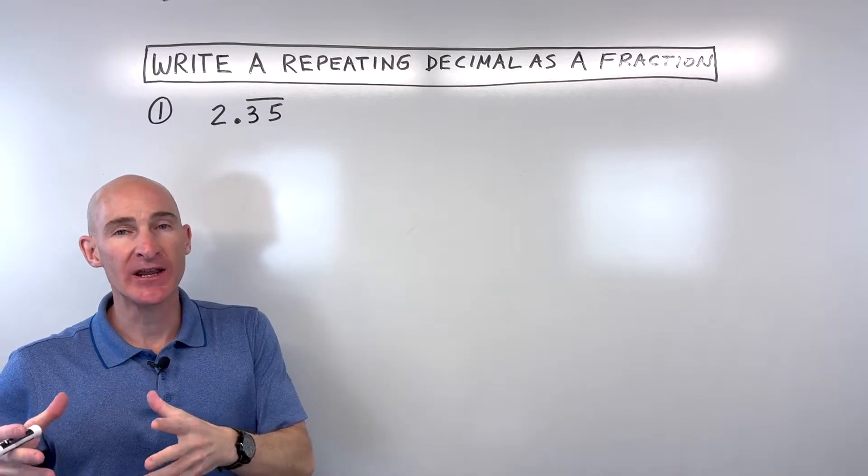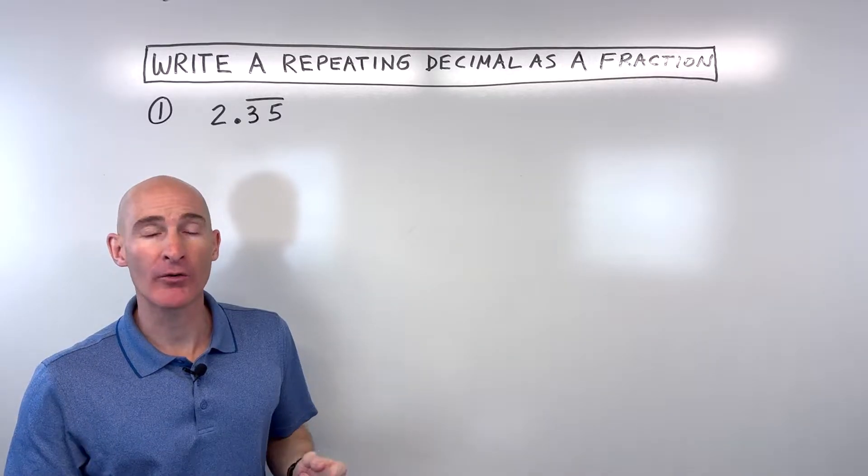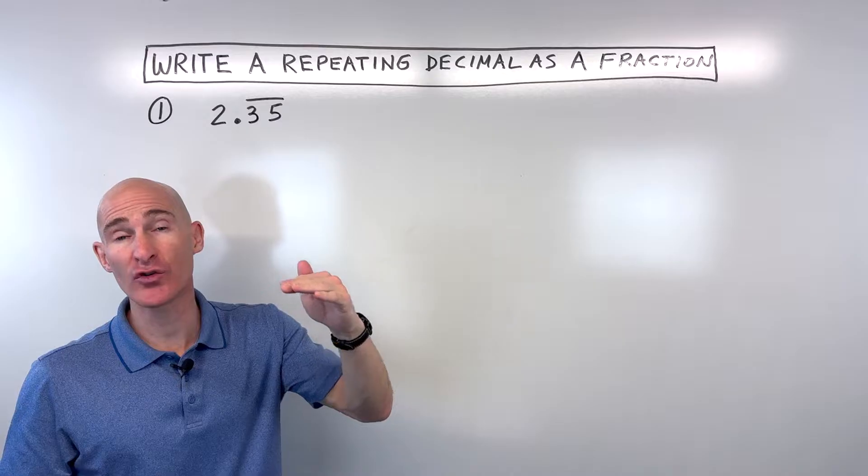In this video, you're going to learn how to change a repeating decimal into a fraction or a rational number. A rational number is like a ratio of an integer over an integer.